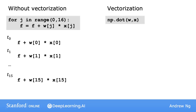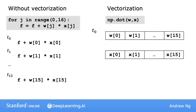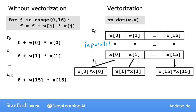In contrast, this function in NumPy is implemented in the computer hardware with vectorization. So the computer can get all values of the vectors w and x, and in a single step, it multiplies each pair of w and x with each other, all at the same time in parallel. Then after that, the computer takes these 16 numbers and uses specialized hardware to add them all together very efficiently, rather than needing to carry out distinct additions one after another to add up these 16 numbers.